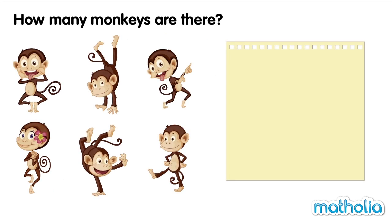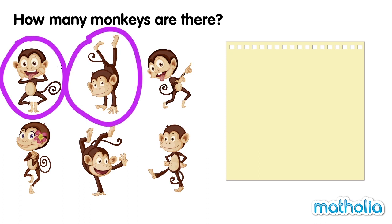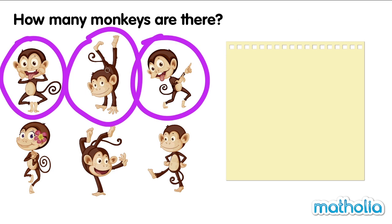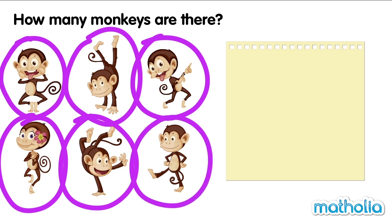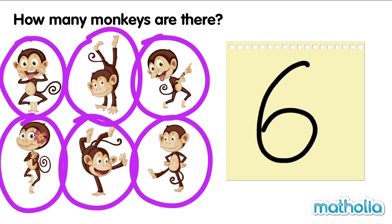How many monkeys are there? One. Two. Three. Four. Five. There are six monkeys. Six.